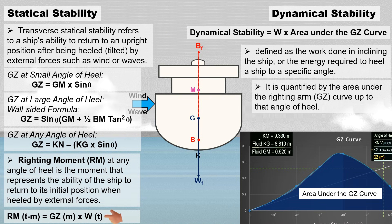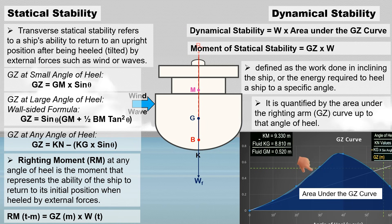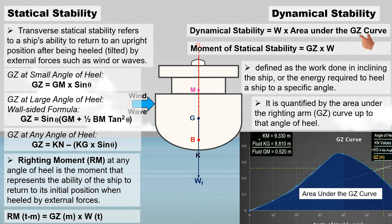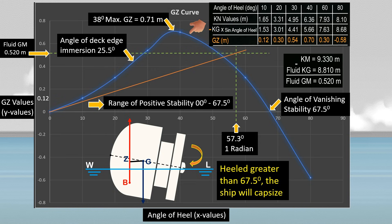Looking at the formulas, statical stability and dynamical stability are interconnected concepts that together provide a comprehensive understanding of a ship's stability behavior. The righting moment — a key aspect of statical stability — is calculated by multiplying the righting arm by the ship's displacement. Dynamical stability, on the other hand, is determined by multiplying the ship's displacement by the area under the GZ curve. This GZ curve was constructed in a previous video; if you want to see the full details, kindly visit the link in the description below.